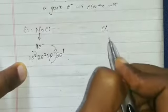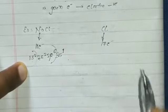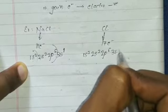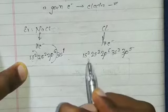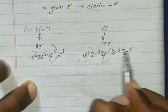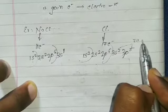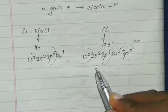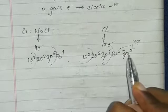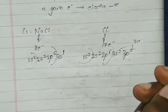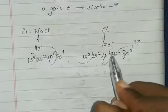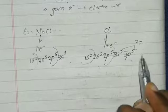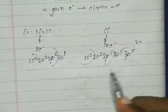Chlorine has 17 electrons. Its electronic configuration is 1s², 2s², 2p⁶, 3s², 3p⁵. It has 7 electrons in its outermost shell — 7 valence electrons — so it is also unstable. For a stable configuration it would need 1s², 2s², 2p⁶, 3s², 3p⁶, totalling 18 electrons.